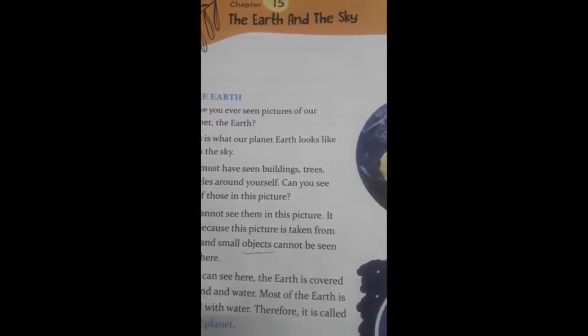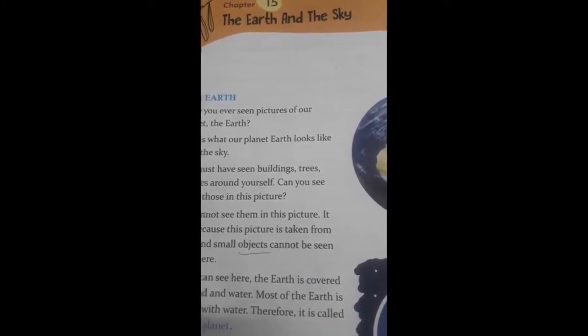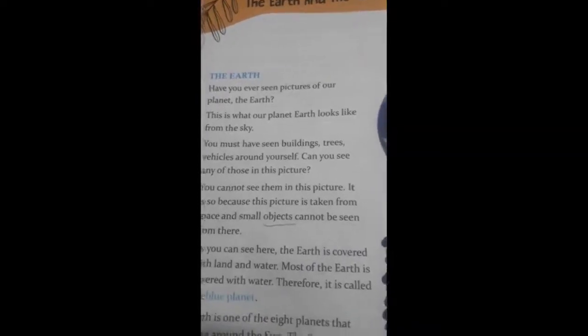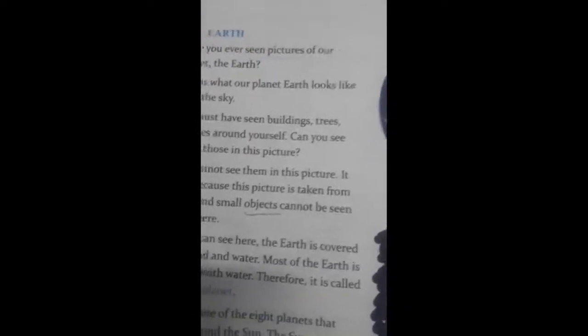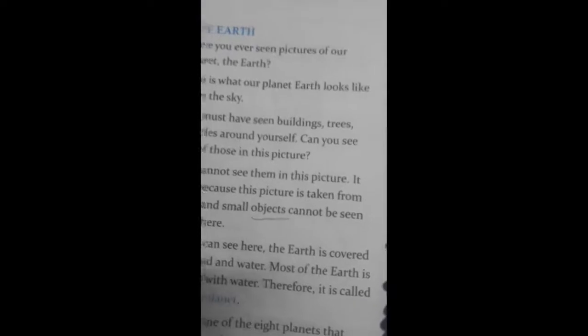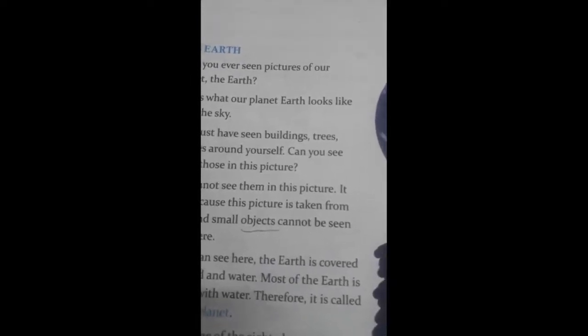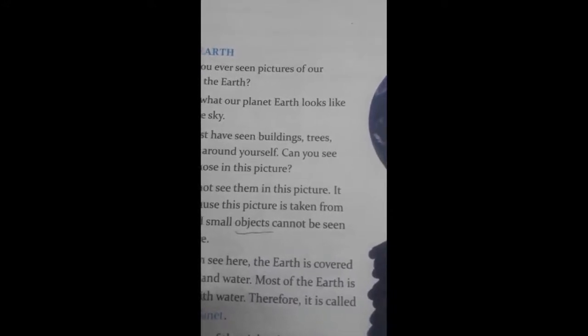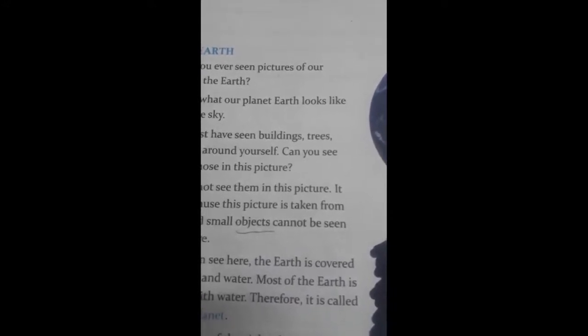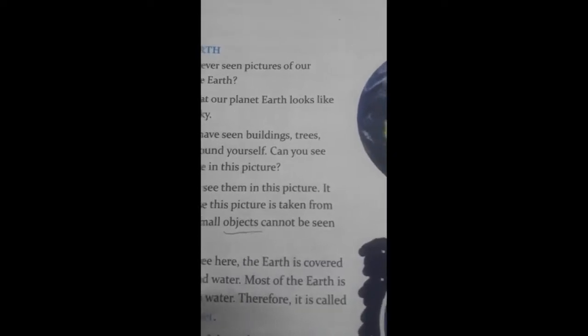We will continue the same chapter which we have started. Before we move to the next page, I will quickly revise the chapter. The Earth and the Sky. Children, how many planets are there in solar system? Yes, there are 8 planets in solar system. And what is the name of our planet? Yes, it is Earth.